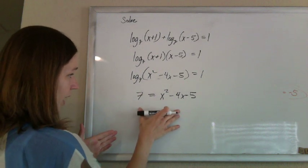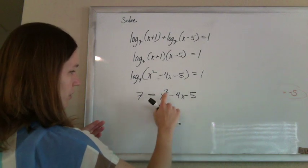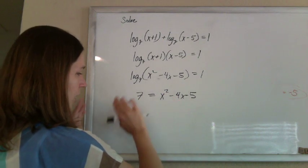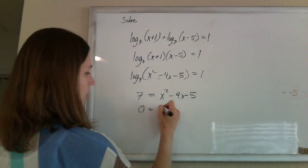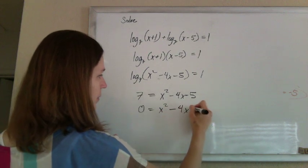And solve this however you can. It's a quadratic. Whenever you're left with an equation with a power of x that's bigger than 1, your strategy is to set it equal to 0 and solve. So 0 will equal x squared minus 4x minus 12.